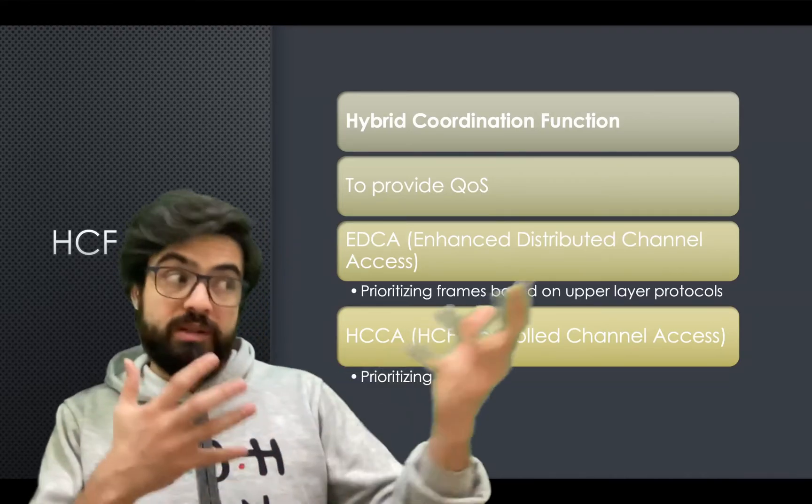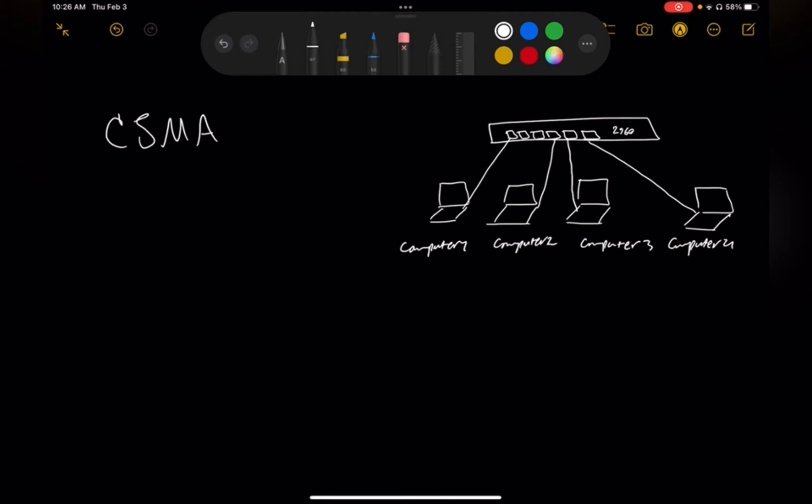The first concept is CSMA. In order to explain it and everybody understanding, let's take a look at computers connected to each other via a Cisco 2960 layer 2 switch. Computer number one is gonna share some data to computer number two by sharing voltages in the channel, in the media. What if at the same time computer number four wants to share data to computer number two? What will happen?